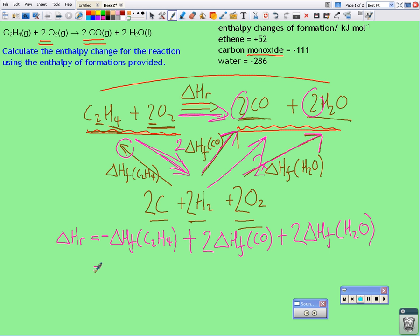If I find those values and pop them in, we end up with negative 52, plus twice negative 111, plus twice negative 286. And that gives me negative 846 kilojoules per mole.